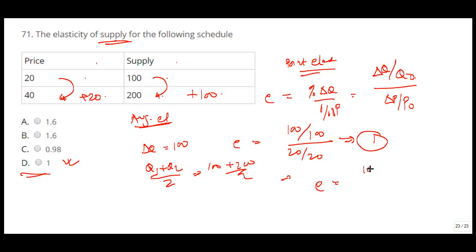So in that case elasticity will be 100 divided by 150, and the change in the price is 20 divided by 30. So if you see, in this case also it is the same, it will be 1. Either you take the average or you take the point elasticity, in both cases it is coming as 1.